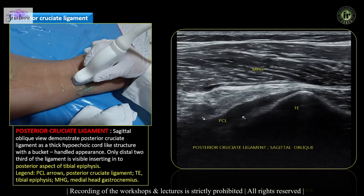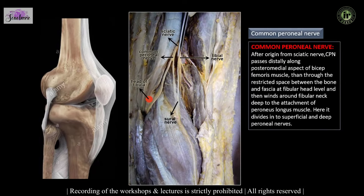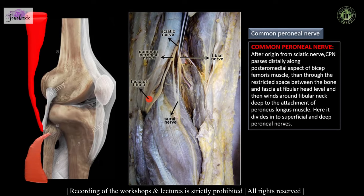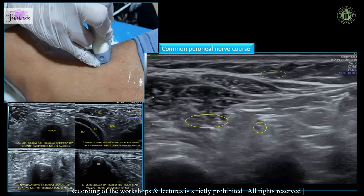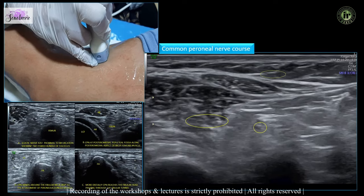Keeping the caudal aspect of the probe over the tibial epiphysis, we rotate the cranial end of the probe towards the medial epicondyle in a sagittal oblique position. Then you can see the distal two-thirds of the posterior cruciate ligament, which appears as a thick hypechoic cord-like structure with a bucket-handle appearance. Another common structure we are asked to see is the common peroneal nerve on the posterolateral aspect of the knee joint, and we can demonstrate it nicely with a little practice.